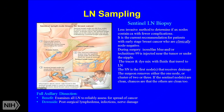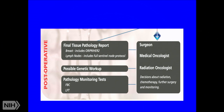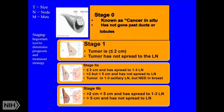After surgery, we have the final pathology report and send tissue for genetic workup. The patient then sees the medical oncologist and radiation oncologist for a final treatment plan. Staging is an important tool to determine prognosis and guide treatment. Stage zero is carcinoma in situ — cancer that has not gone past the ducts or lobules. Stages one through three are based on the TNM system: T is tumor size, N is node status, M is distant metastasis.